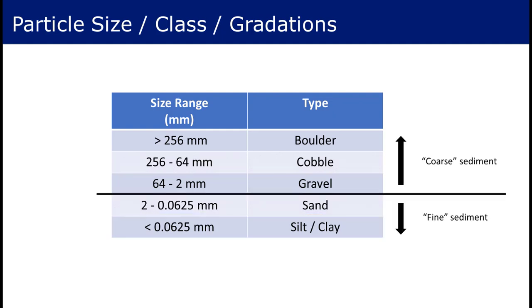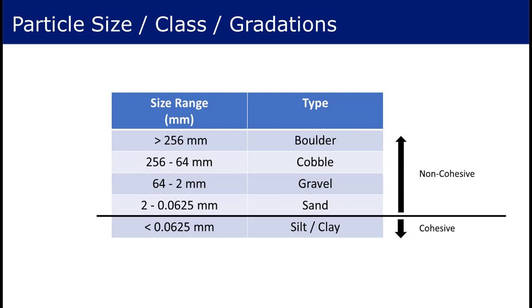More broadly, material that is larger than 2 millimeters, the gravel, cobbles, and boulders, are referred to as coarse sediment. Material smaller than 2 millimeters is referred to as fine sediment. This distinction is made because of the general trend that coarse sediment is transported primarily as bed load and fine sediment as suspended load. An additional distinction is that sand and larger particles are non-cohesive, and particles smaller than sand are cohesive, as mentioned previously.